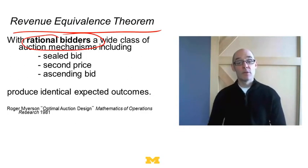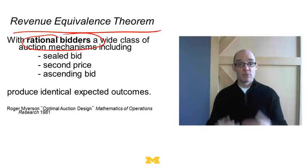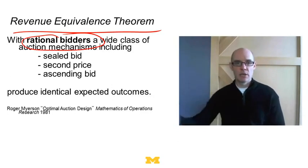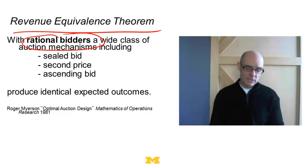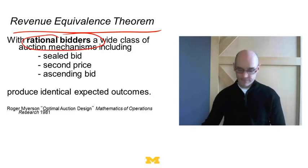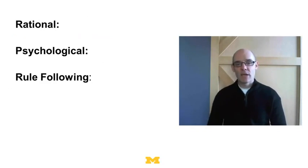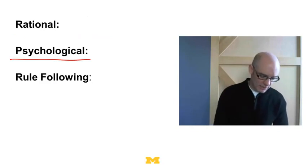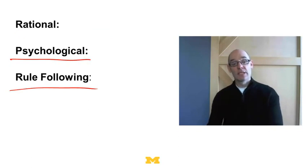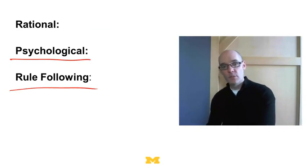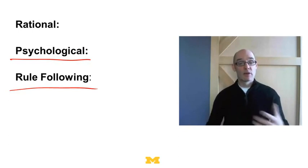This is a really powerful theorem, and here we see one of the values of models. We might sit around and think ascending bid auctions are better, or sealed bid, or second price. What this tells us is if we have rational bidders, all three are equally good. But we may not have rational bidders — we could have psychological bidders or rule-following bidders. So here's where we take our model results, the revenue equivalence theorem, and bring in our experience to think about the bidders in the auction.